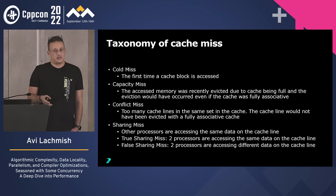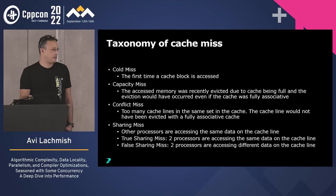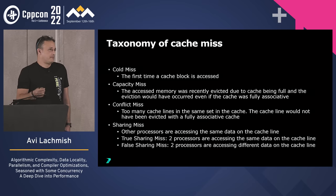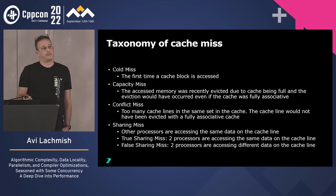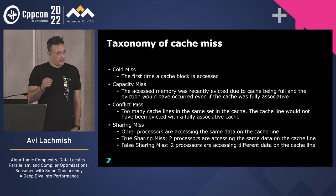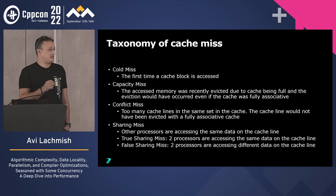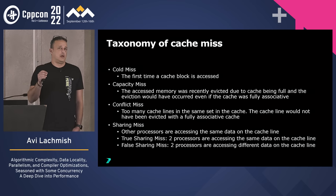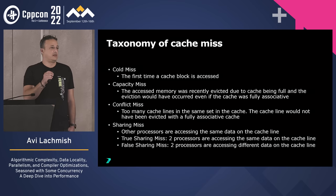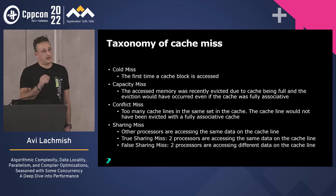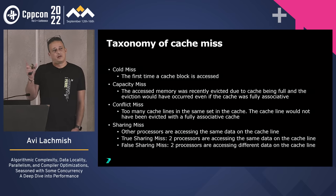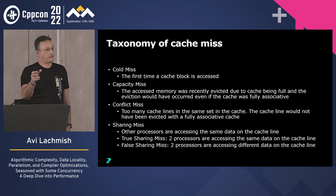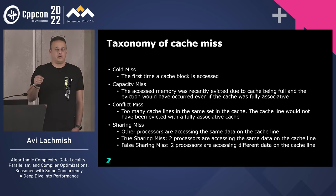True sharing is a data race — we know how to handle it with mutexes and atomics. False sharing means from the programming model there's nothing wrong, but the hardware still invalidates the cache line. The hardware guarantees cache coherency and the correct result, but not the timing. If one thread writes to a cache line, it invalidates that line for the other thread — so when the other thread wakes up, it must fetch its data from memory again.